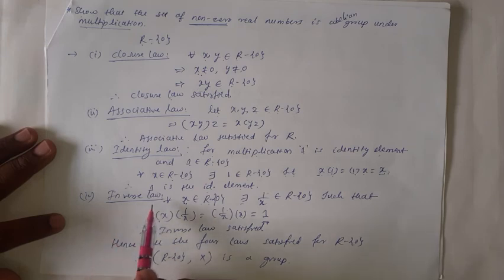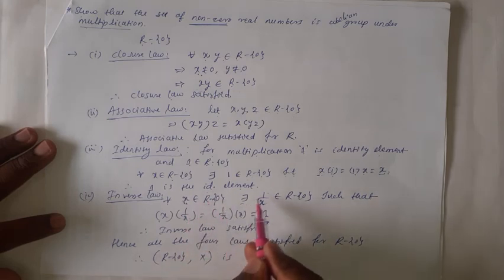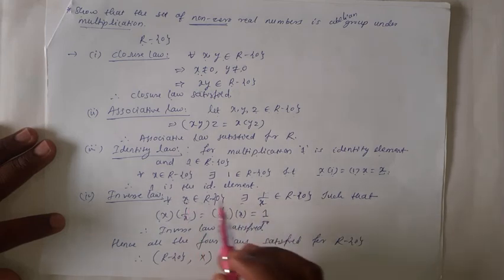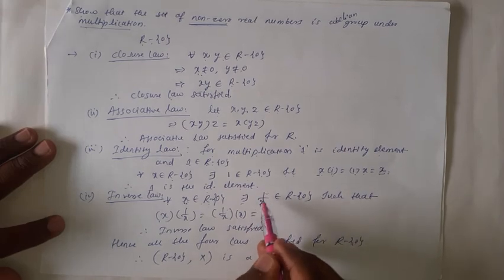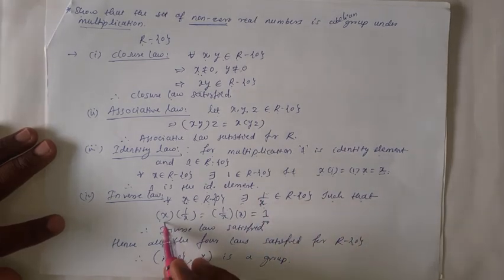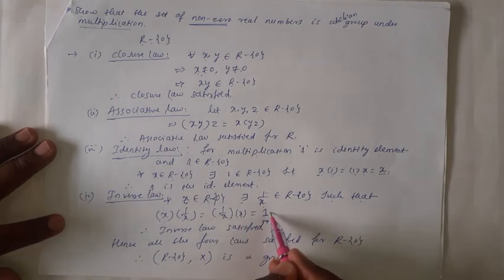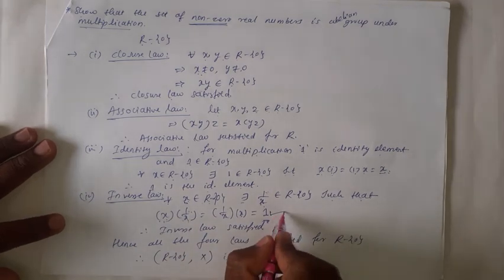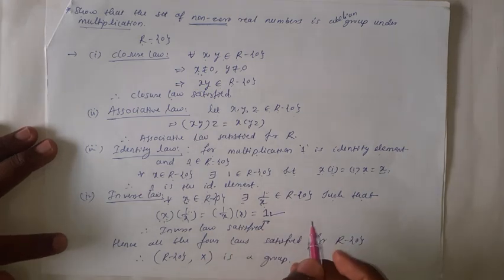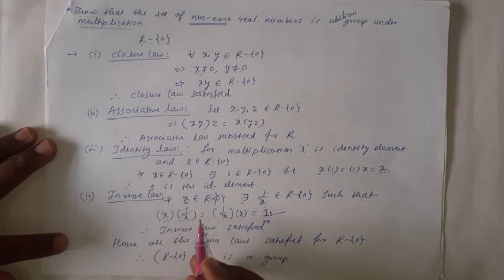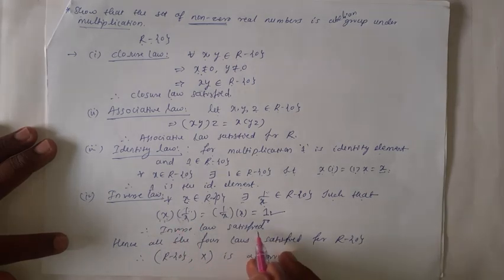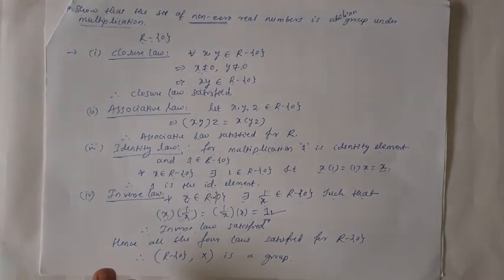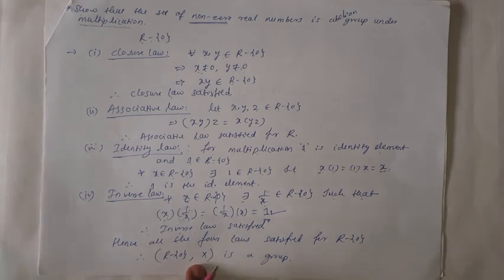For the Inverse law: for all x belonging to R\{0}, there exists 1/x, and since x is non-zero we can define 1/x, which is also a non-zero real number, such that x·(1/x) = (1/x)·x = 1. So 1/x multiplied by x gives 1, which is the identity element of R\{0} under multiplication. Therefore, 1/x is the inverse of x, the Inverse law is satisfied, and all four laws being satisfied means (R\{0}, ×) is a group.